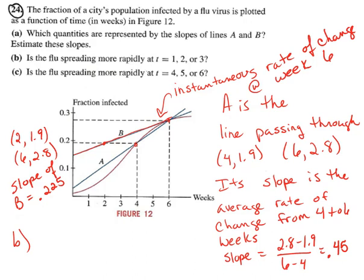So now, if the question is, is the flu spreading more rapidly at t equals 1, t equals 2, or t equals 3? You can kind of eyeball this, you just want to see when is the tangent line the most steep. It's definitely steeper at 2 than it is at 1. But I think it's probably the most steep at 3 weeks. So I would say at 3 weeks.